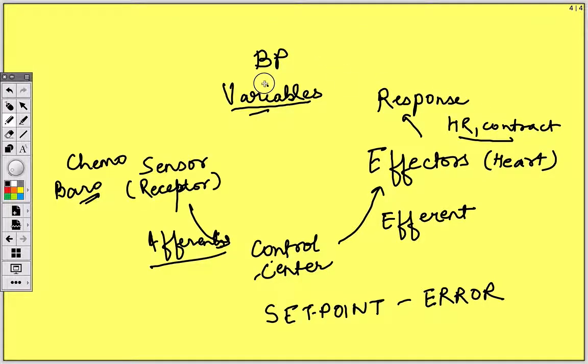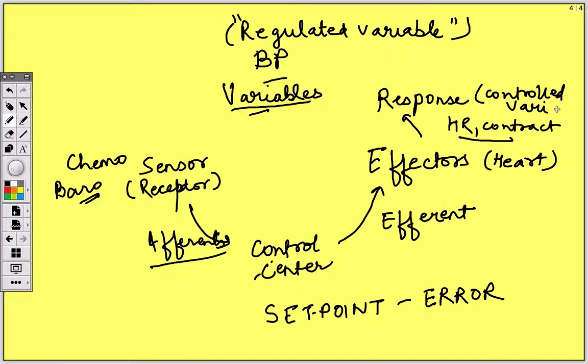This is the effector output, this is the monitored variable. This monitored variable is also known as regulated variable and the variables which are manipulated to keep regulated variable in a near normal range are known as controlled variable. So here heart rate and contractility are controlled variables. In case of BP example, heart rate and contractility are controlled variables while BP is regulated variable.